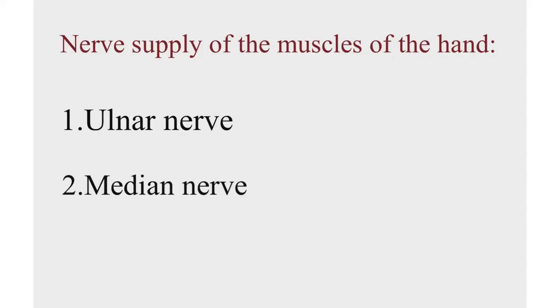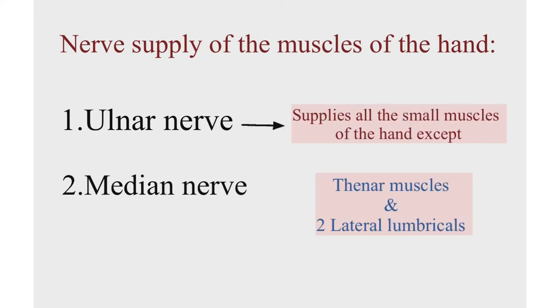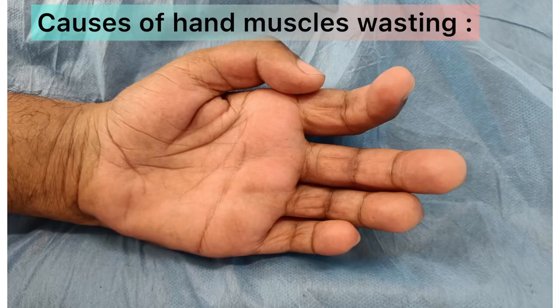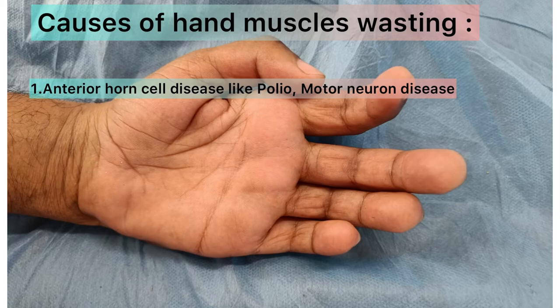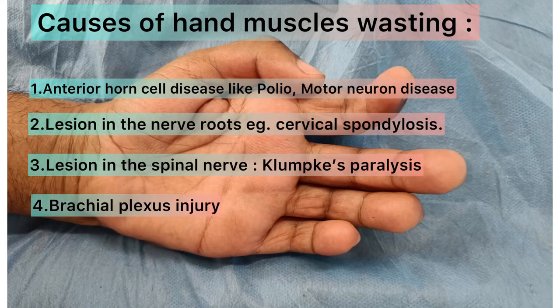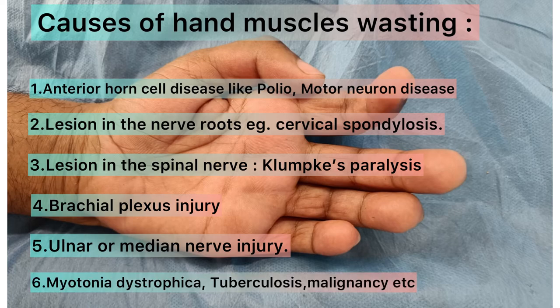The ulnar nerve supplies all the small muscles of the hand except the thenar muscles and the two lateral lumbricals, which are supplied by the median nerve. What are the causes of hand muscle wasting? It could be because of lesions in the anterior horn cells as seen in diseases like acute poliomyelitis and motor neuron disease, lesions in the nerve roots, lesions in the spinal nerves like Klumpke's palsy of birth injury, lesions of the brachial plexus, or lesions in the ulnar or median nerve or both, and muscle diseases.